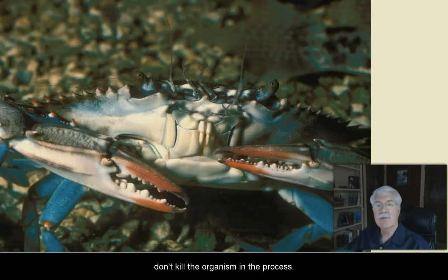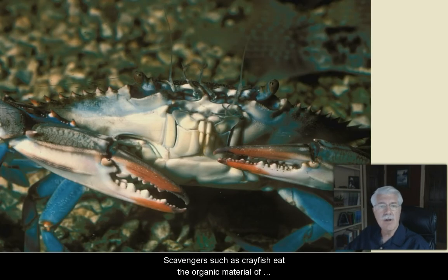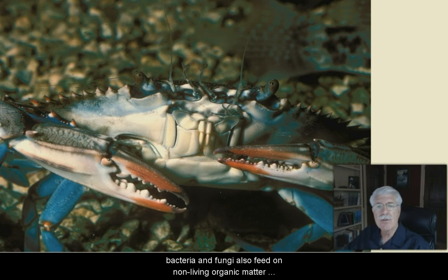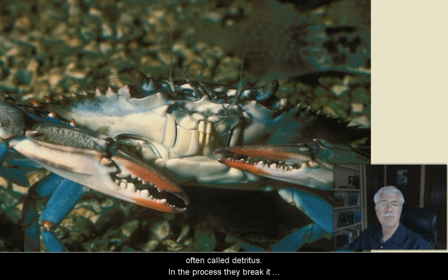Parasites, such as leeches, get their energy directly from feeding off other living organisms, but they usually don't kill the organism in the process. Scavengers, such as crayfish, eat the organic material of dead plants and animals.